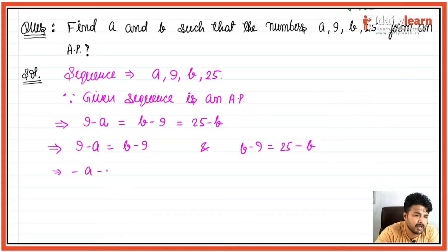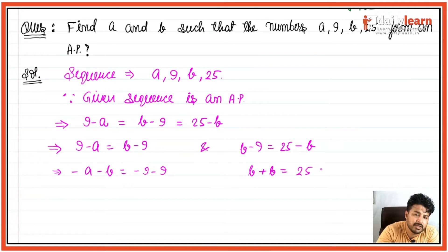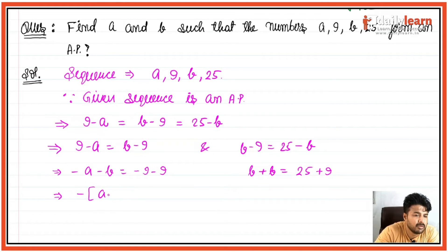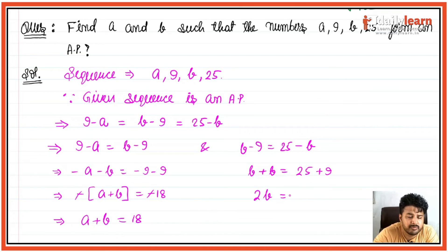Pehle equation se: variable ek taraf le lo, toh minus a minus b is equal to minus 9 minus 9, yaani minus a minus b equals minus 18. Minus common lo, toh a plus b is equal to 18.